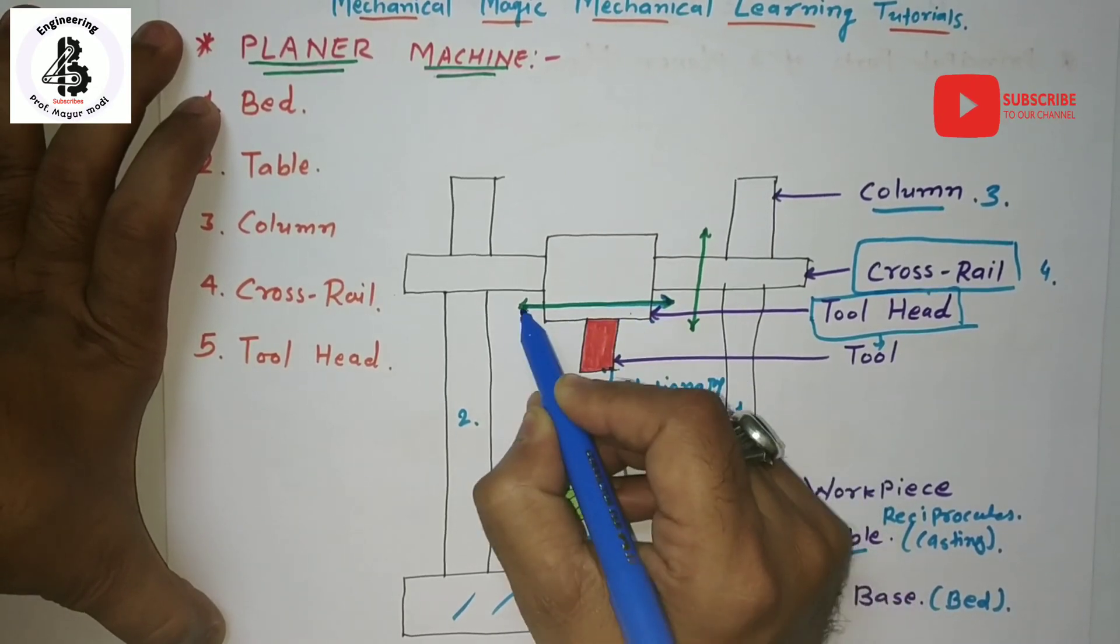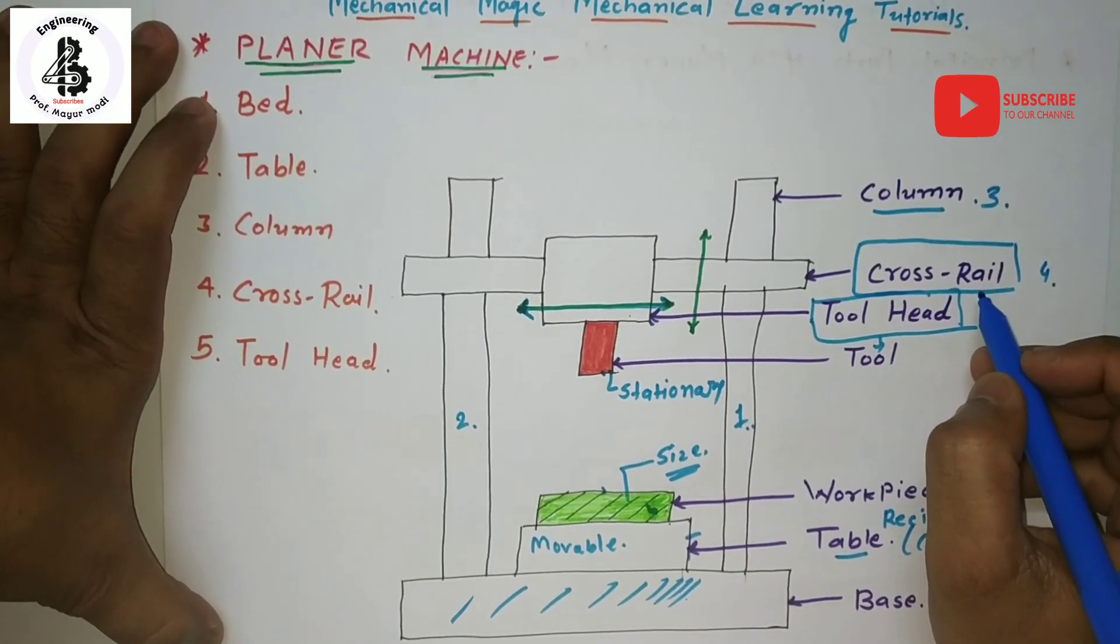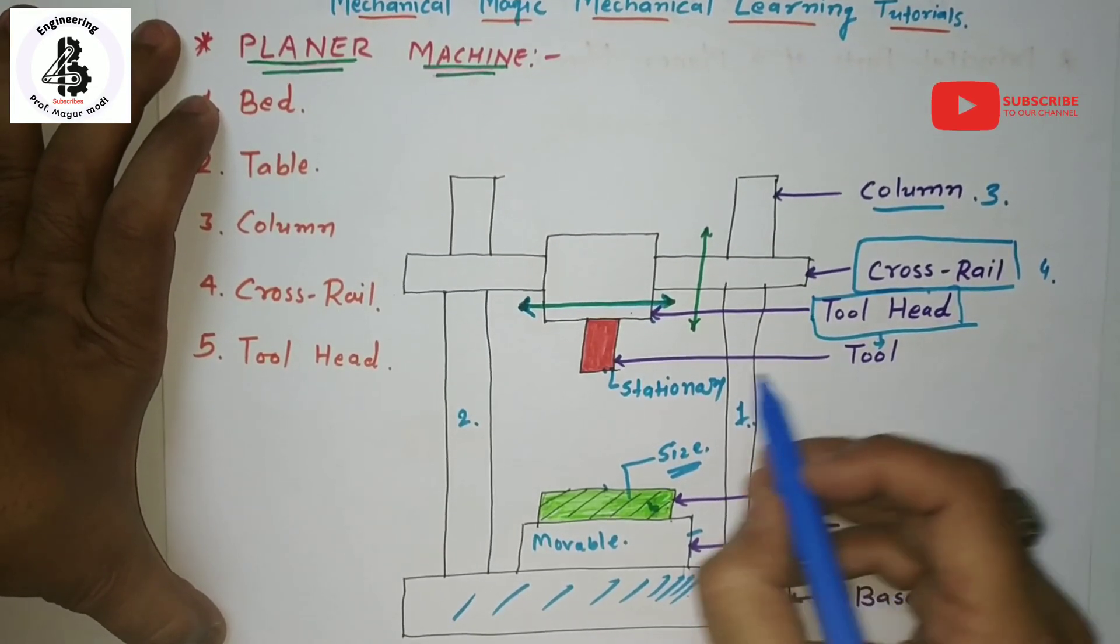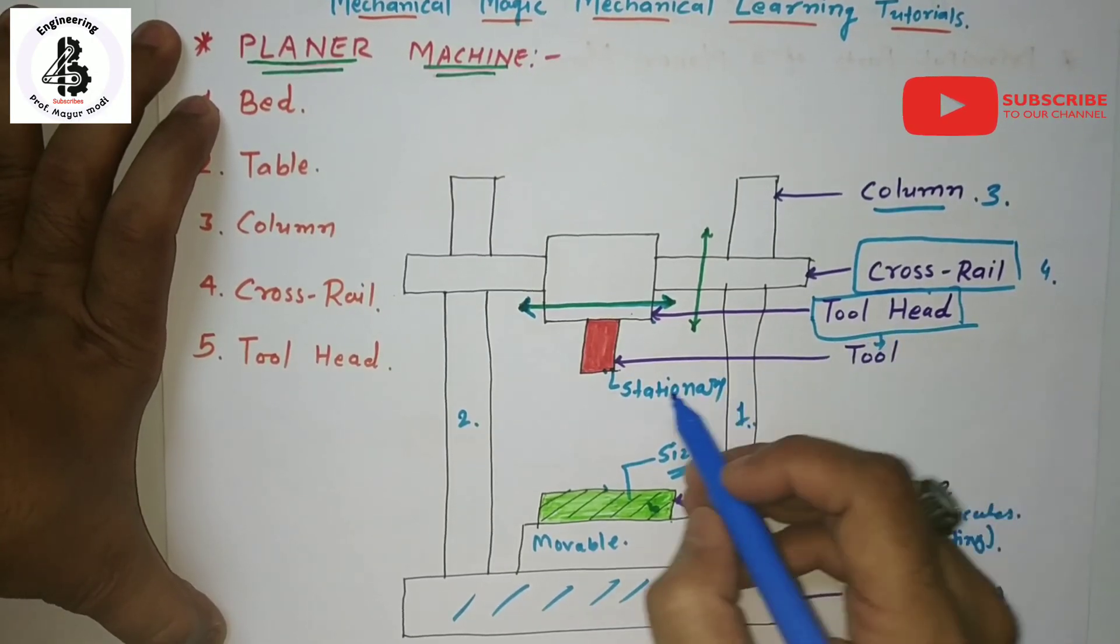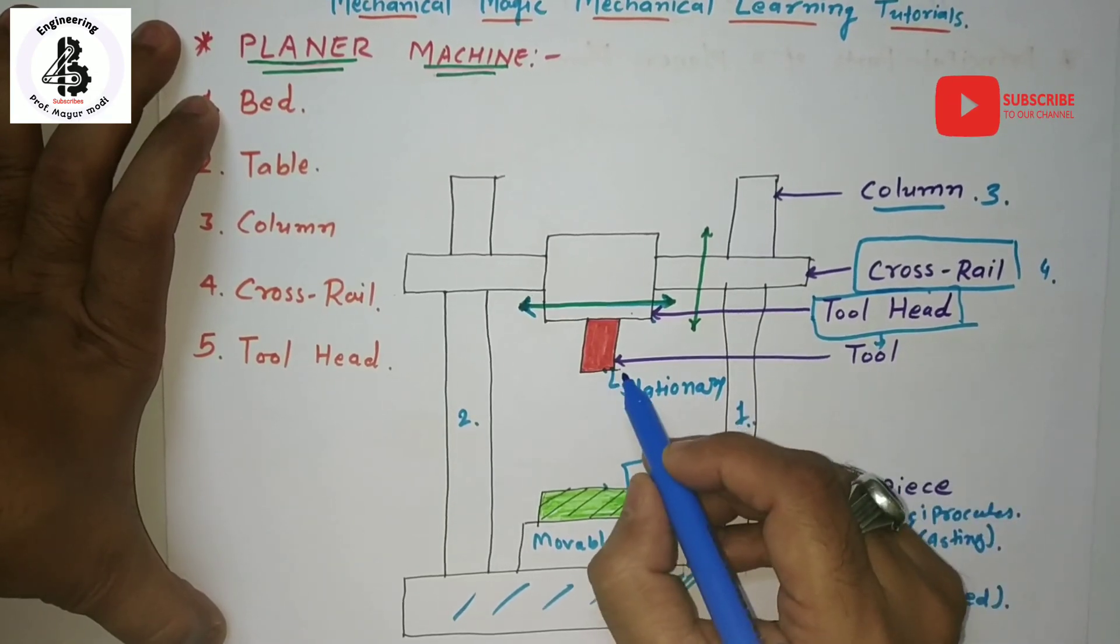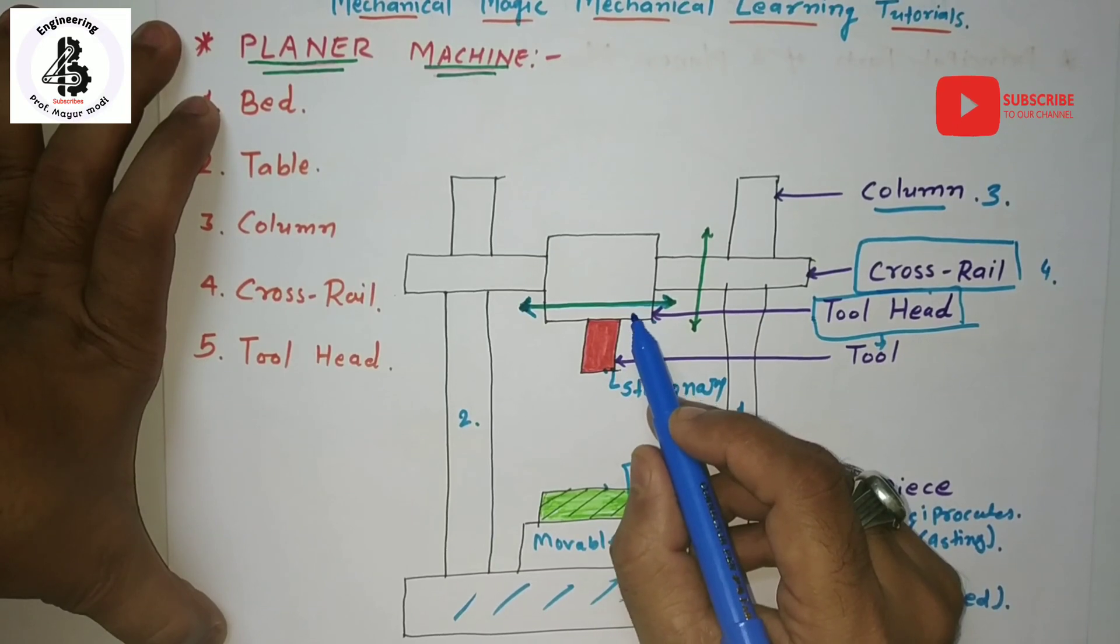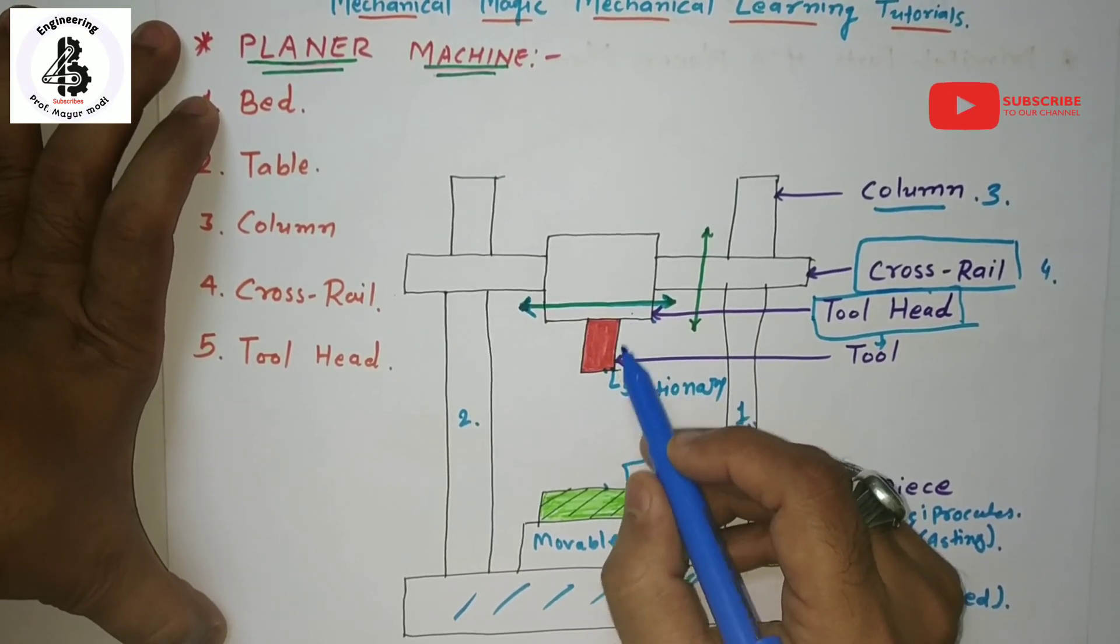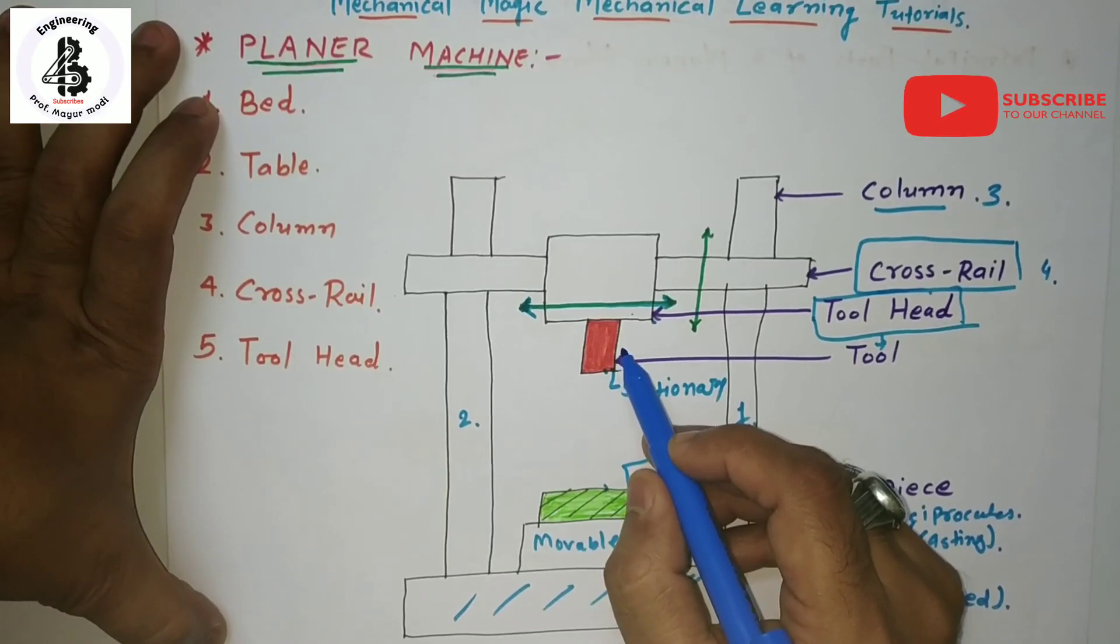Finally, the tool head. As the name suggests, the tool head carries a tool post and holds the cutting tool. The tool is mounted onto the cross rail by the dovetail saddle and the tool post is hinged onto the tool head.